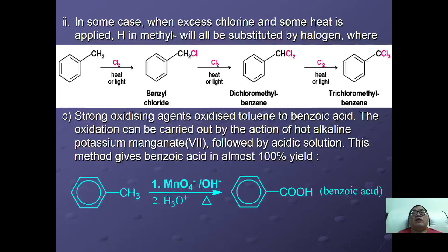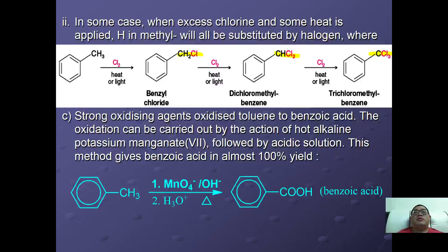In cases where excess chlorine is present and heat is supplied, all the hydrogens in the methyl group can be substituted by halogen, eventually forming CH2Cl, CHCl2, and even CCl3.